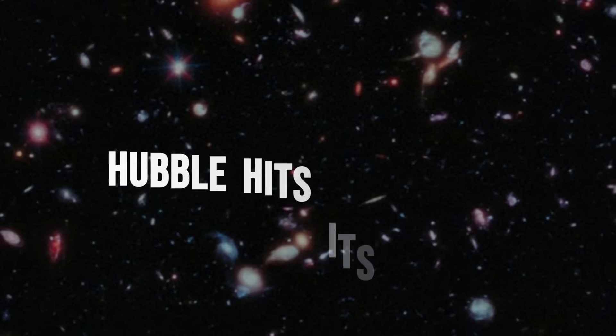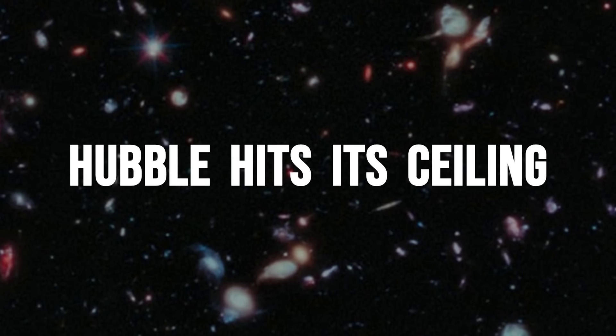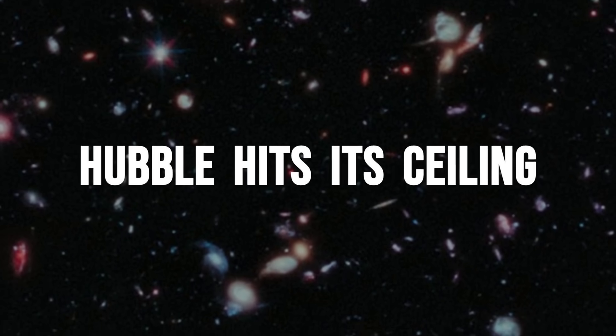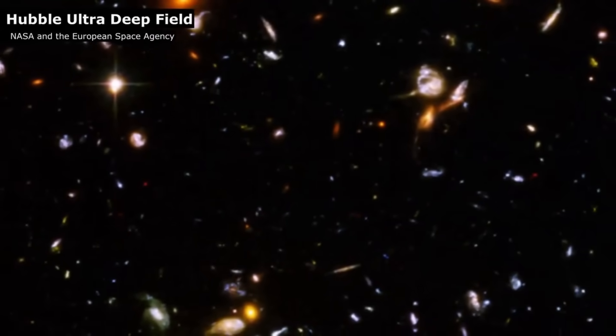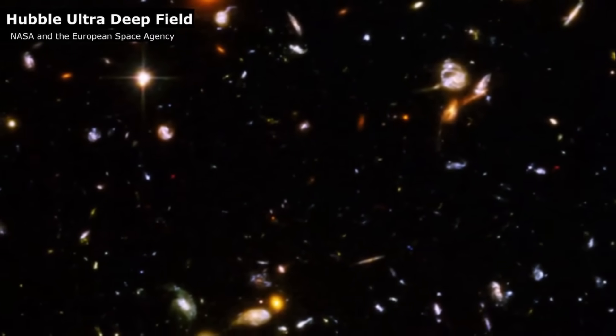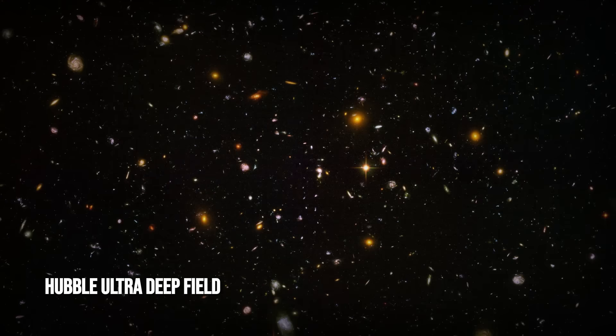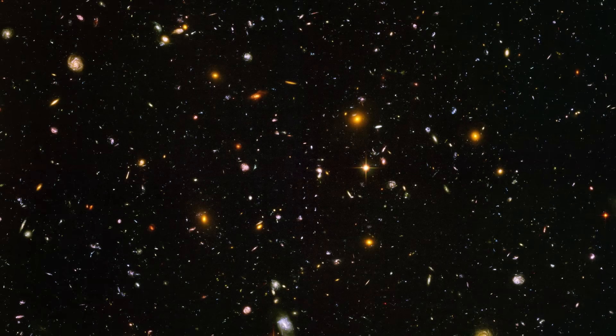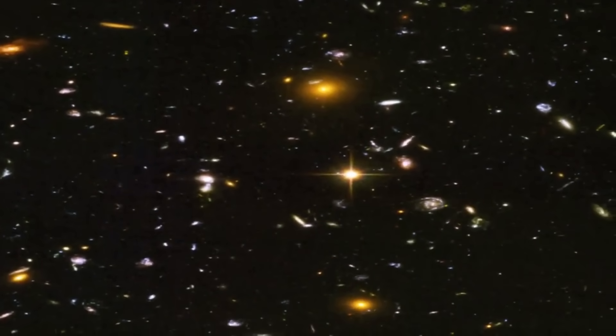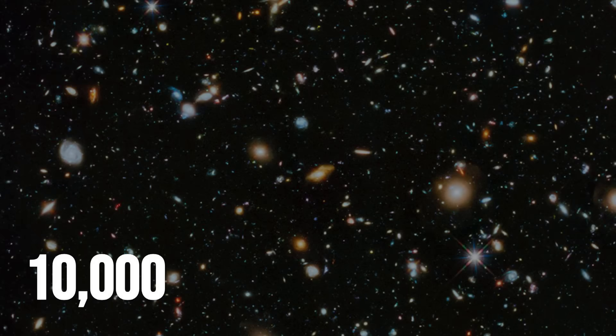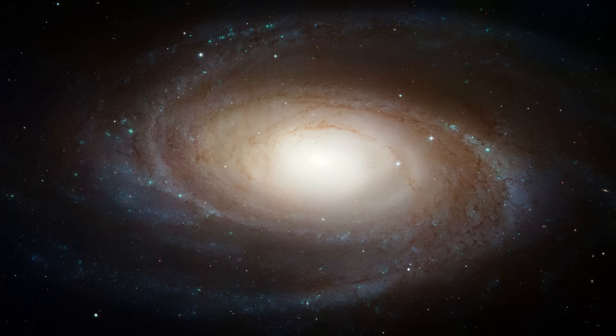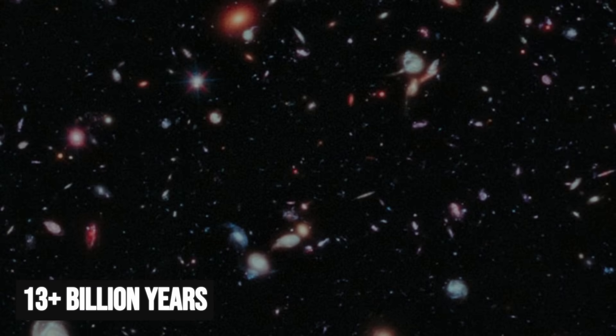In 2004, astronomers pointed Hubble's gaze toward a seemingly empty patch of sky in Fornax and let it stare for over 11 days. The result, known as the Hubble Ultra Deep Field, became an icon of modern astronomy. What looked like a blank void was revealed to hold nearly 10,000 galaxies, each a sprawling island of stars, some shining from over 13 billion years ago.